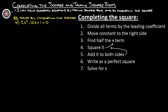The other method we'll look at is solving by completing the square. Completing the square has several steps. The first step is to divide all terms by the leading coefficient — the number in front of the largest power of x. In this case, that's the two, so we divide everything by two.